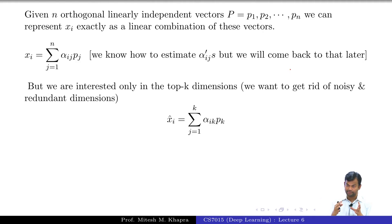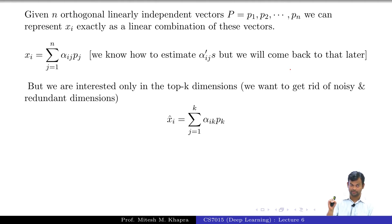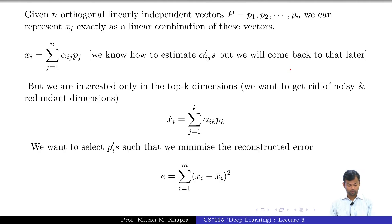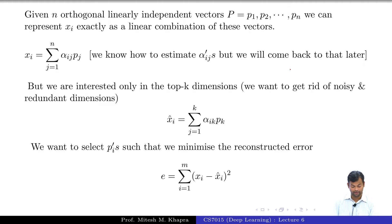There is some error which I am not able to capture, and I made a conscious decision that that error is not important — I am willing to let it go. Hence, I want to represent the data using fewer dimensions. So this is exactly what you do in PCA when you take the top k dimensions. We want to select P_i's such that we minimize the reconstruction error.